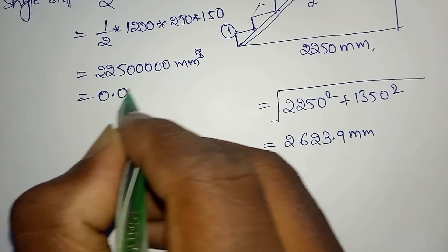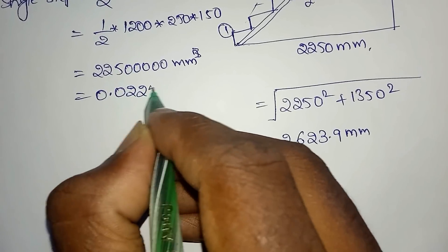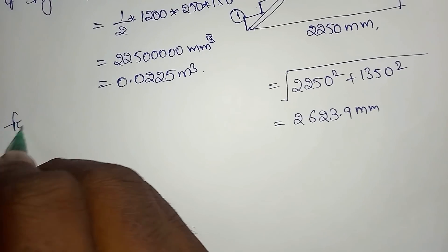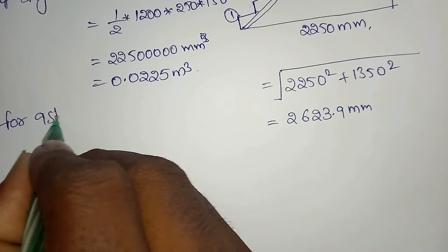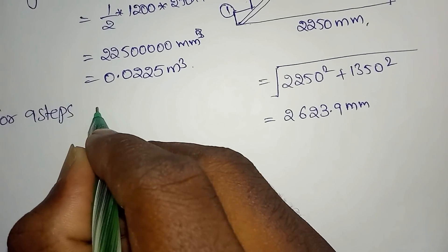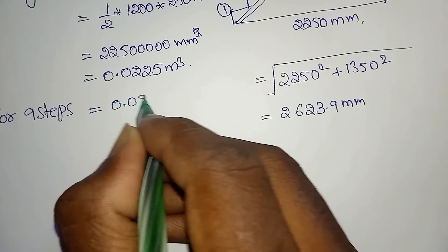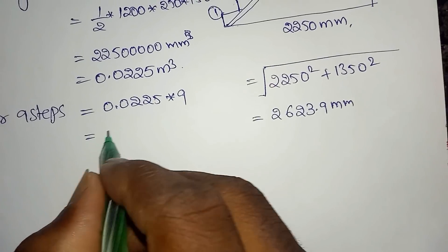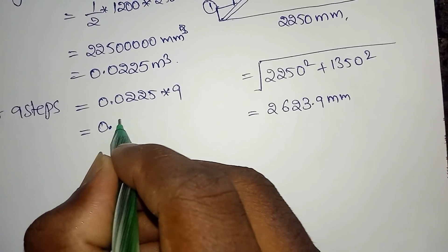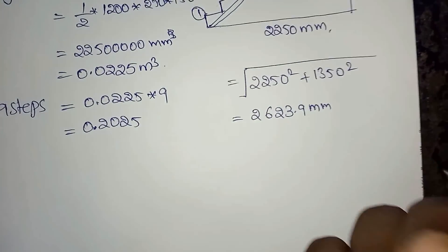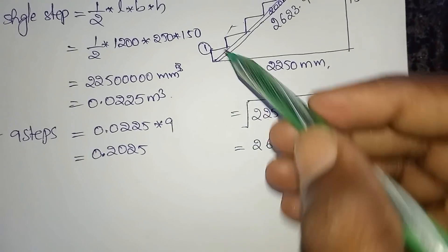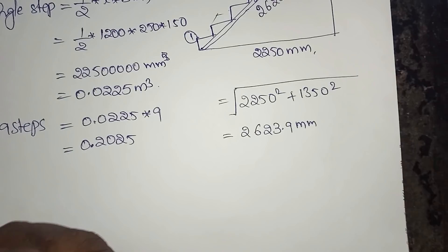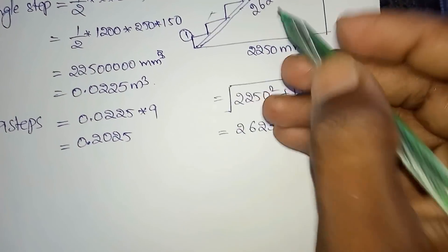The value is 0.025 meter cube. So for 9 steps, it is 0.025 into 9 = 0.2025 meter cube. For 9 steps completed, and next is the waist.